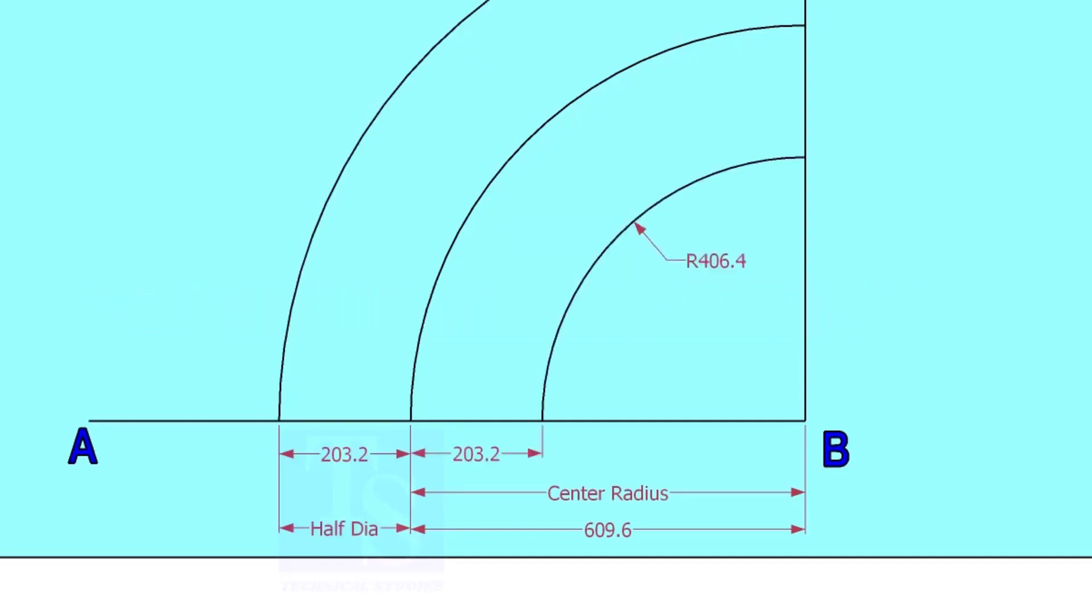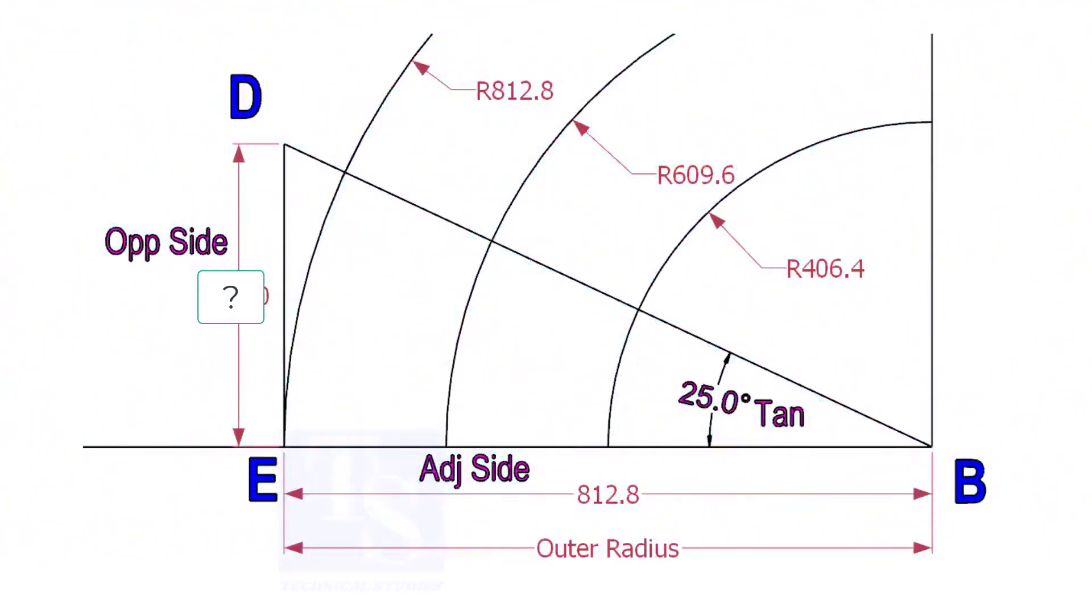Mark the half OD arcs on both side of the center line. Mark a line 25-degree rotated from the base line AB.